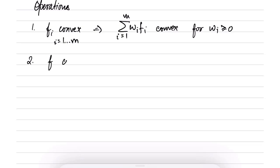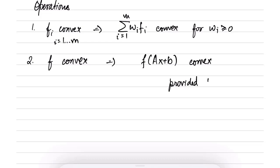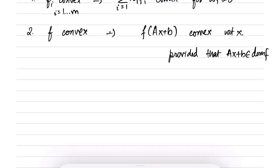The second operation: if a function f is convex, then f(Ax + b) is also convex. This is the affine transformation of the input. It is convex provided that Ax + b is in the domain of f, so as long as f(Ax + b) is well-defined, f(Ax + b) is also convex with respect to x. This is also relatively simple to verify using the zeroth, first, or second order condition.